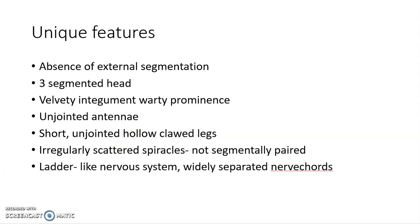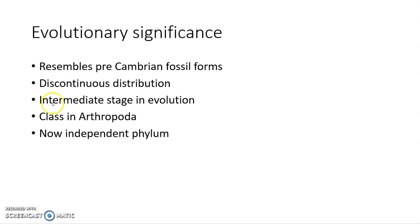Considering their evolutionary significance: they resemble pre-Cambrian fossil forms, show discontinuous distribution, and represent an intermediate stage in evolution connecting annelids and arthropods — that is why they are considered connecting links. Since they resemble pre-Cambrian fossil forms, they are considered living fossils. Due to their resemblance with arthropods, they were earlier included as a class under phylum Arthropoda, but now, with more unique characters identified, they are considered an independent phylum — Phylum Onychophora.